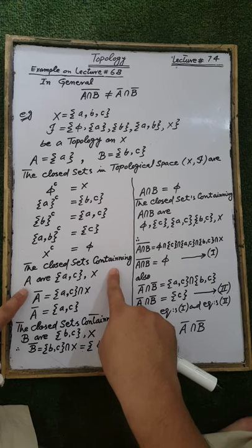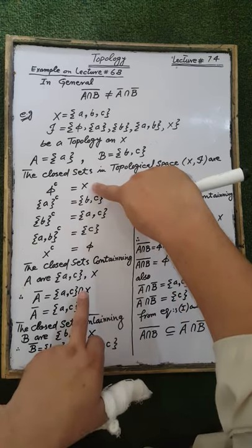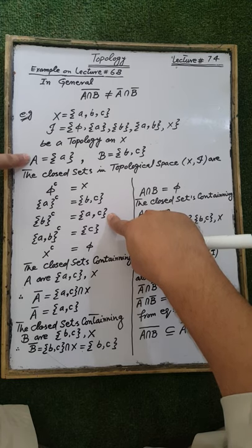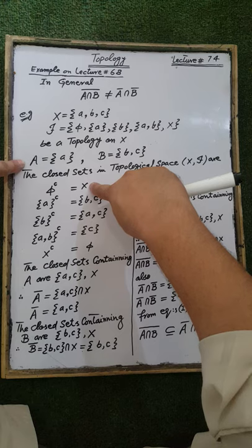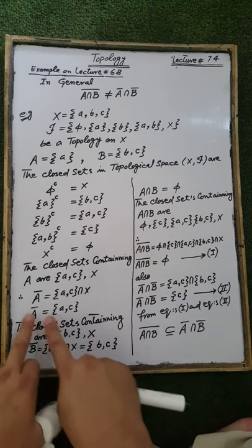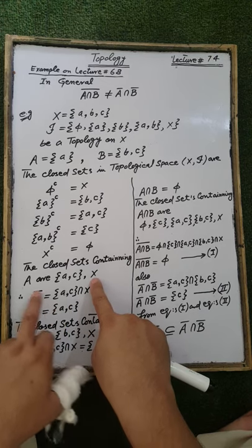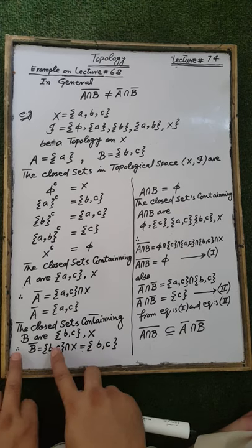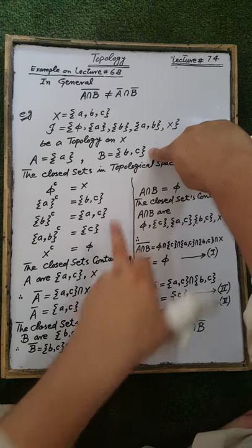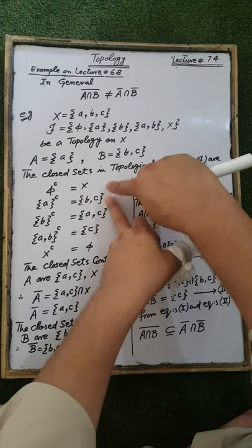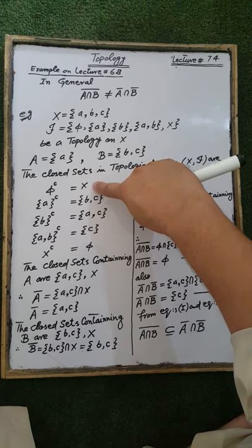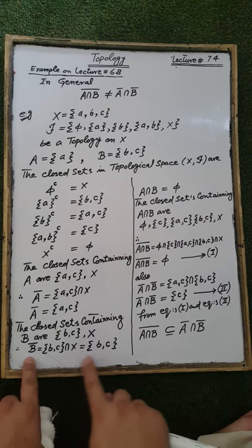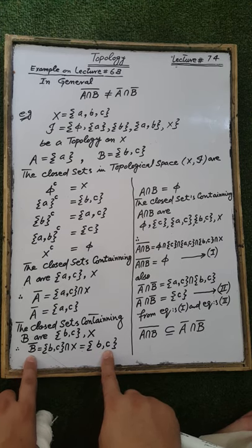Now, the closed sets containing the set A are those closed sets for which A is a subset — namely the set {A, C} and the ground set X. The closure of the set A is the intersection of all closed sets containing A, which is the set containing elements A, C. The closed sets containing the set B are {B, C} and X, and their intersection is the set containing elements B, C, which is the closure of the set B.